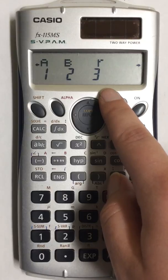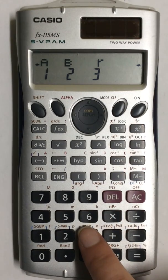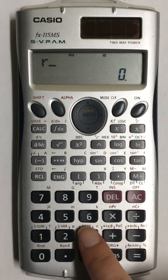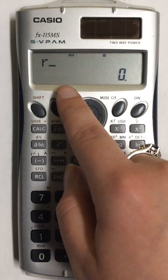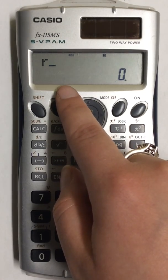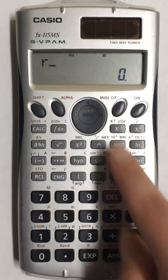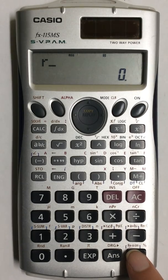My correlation coefficient is R, and so that's what I want to find. It's option 3, so I press that button. R comes up on the screen, but the cursor is still blinking, so that means I need to press the equals button.